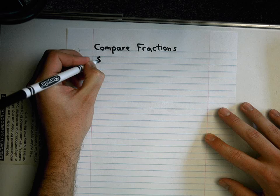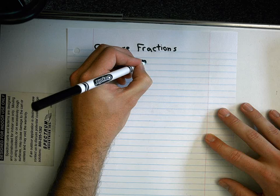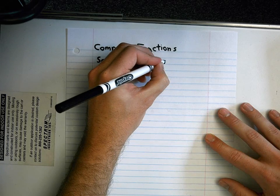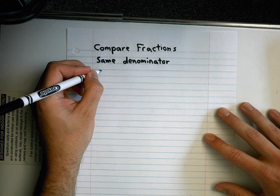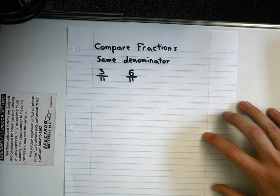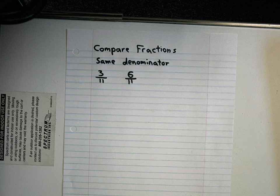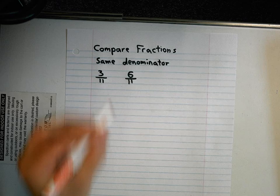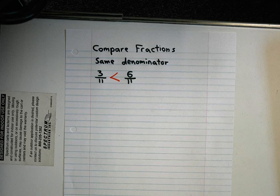Now if we have the same denominator, it becomes very simple. So let's say we're using 11ths — three elevenths and six elevenths. If I take a pizza and broke it up into 11 pieces, and I pulled away six of them to one side and three of them to another, it'd be pretty easy to tell that six elevenths is greater than three elevenths.